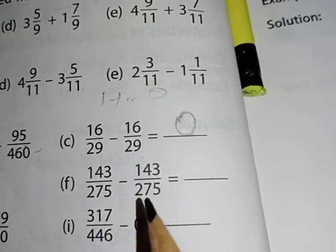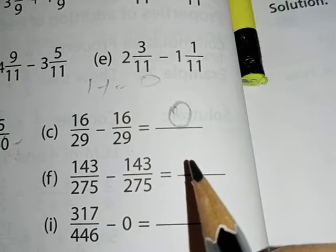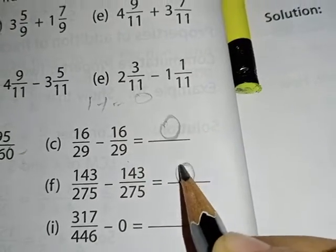Moving forward, this is again same as c: 143 upon 275 minus that same number, so we get here 0 again.